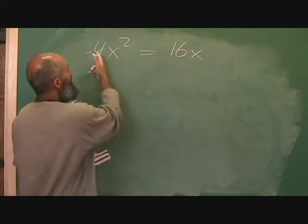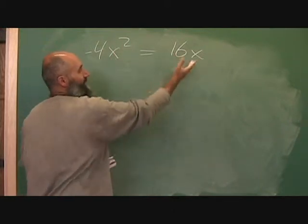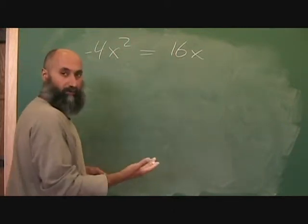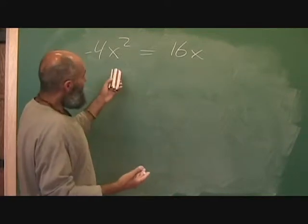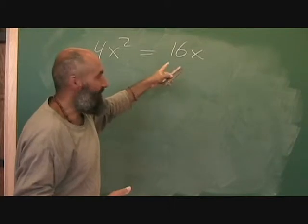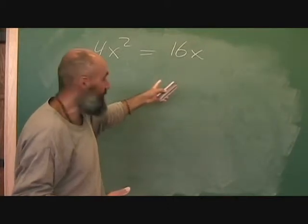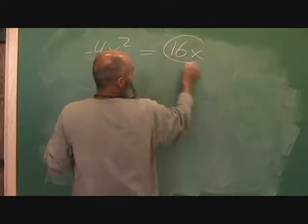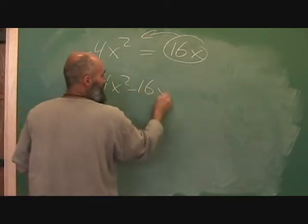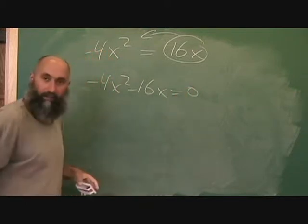So right now we've got negative 4x squared, 16x. What we want to do is bring the 16x over to this side. We'll discuss another way we can do this, but what happens if you do it the other way, you're going to lose the solution. So you grab this guy, bring it over, so that's negative 4x squared minus 16x is equal to zero.